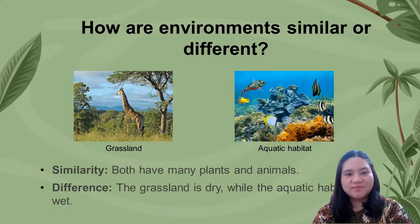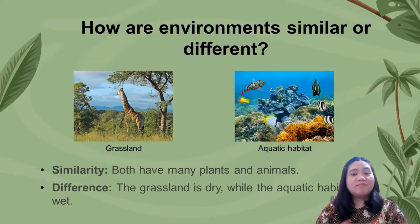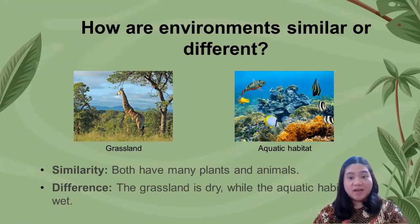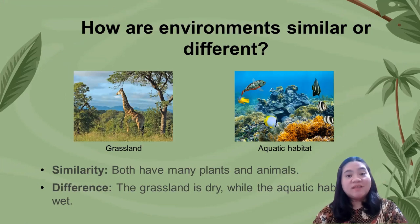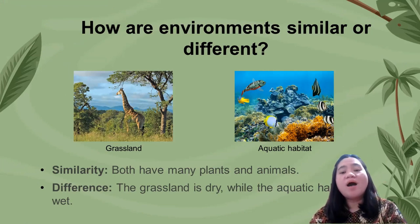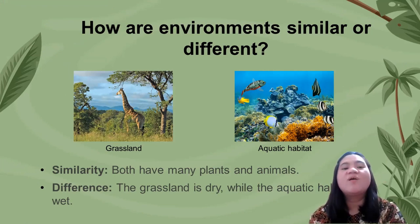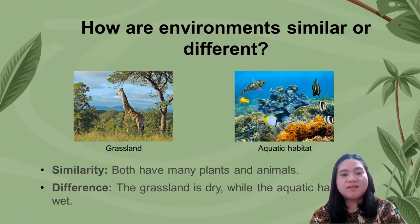Grassland and aquatic habitat — both have many plants and animals. The difference is that the grassland is dry, while the aquatic habitat is wet.